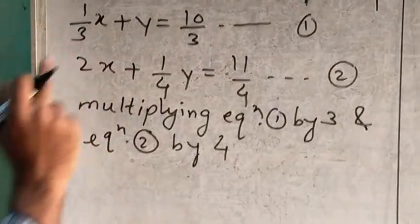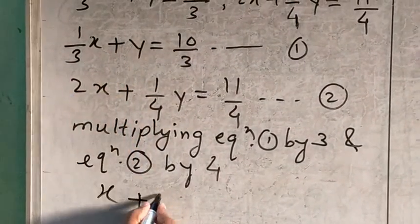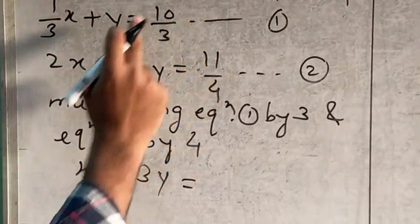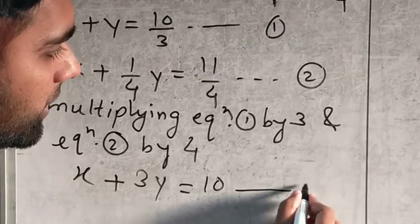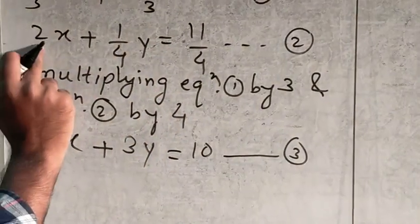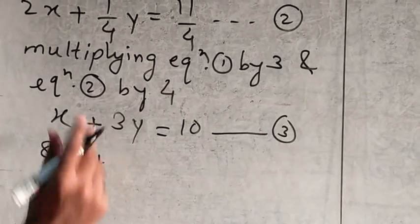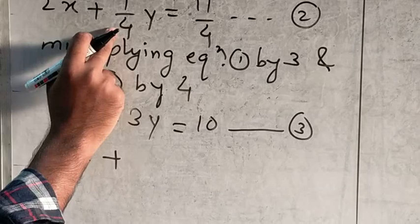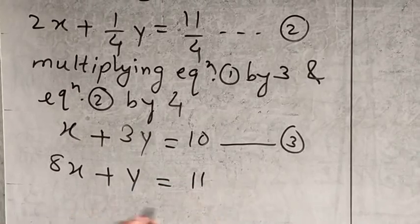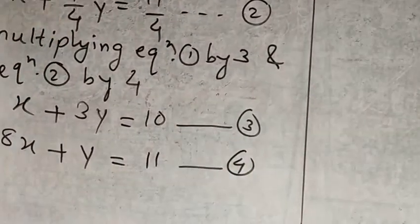Multiplying equation 1 by 3: x into 3, the threes cancel, leaving just x; plus y multiplied by 3 gives 3y; equals 10 upon 3 multiplied by 3, the threes cancel, leaving 10. This gives us equation number 3. Similarly, multiplying equation 2 by 4: 2x times 4 gives 8x; plus 1 upon 4y times 4, the fours cancel, leaving just y; equals 11 upon 4 times 4, leaving 11. This is equation number 4.